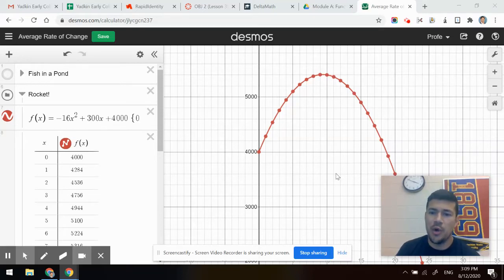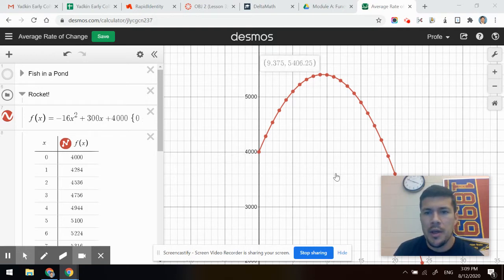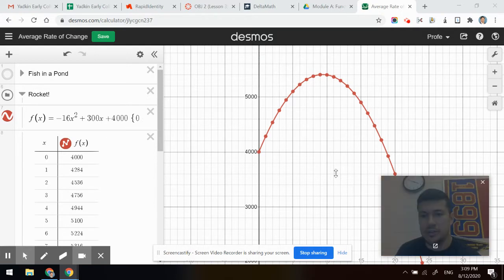Let's try another example. So here's a rocket. Let's imagine a rocket or some projectile is launched from 4,000 feet and starts heading up and reaches a peak and then starts heading back down, just like anything with gravity.